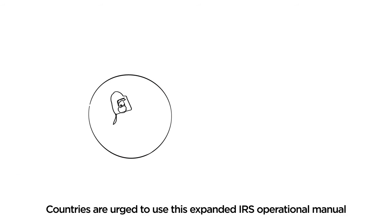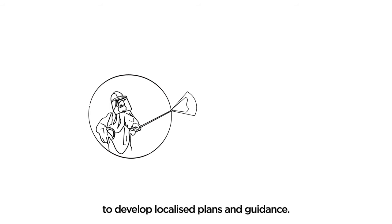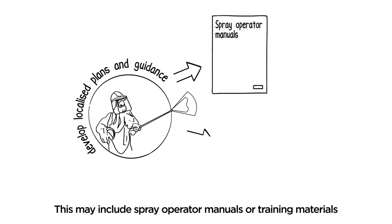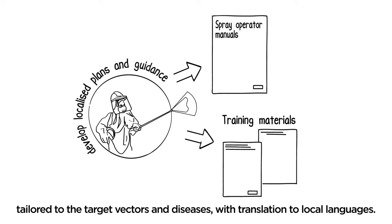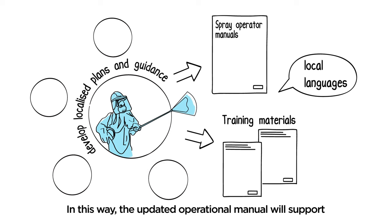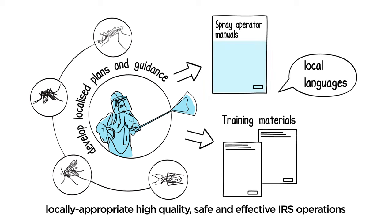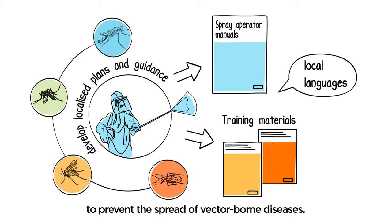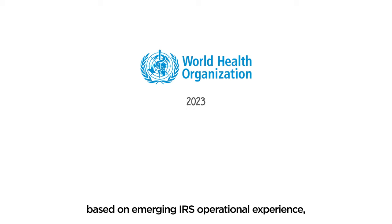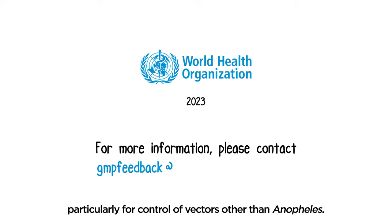Countries are urged to use this expanded IRS operational manual to develop localised plans and guidance. This may include spray operator manuals or training materials tailored to the target vectors and diseases, with translation to local languages. In this way, the updated operational manual will support locally appropriate, high-quality, safe, and effective IRS operations to prevent the spread of vector-borne diseases. WHO plans to extend this manual based on emerging IRS operational experience, particularly for control of vectors other than Anopheles.